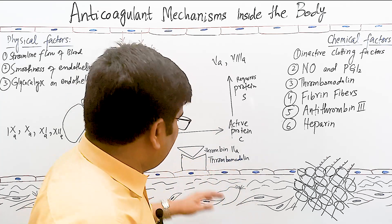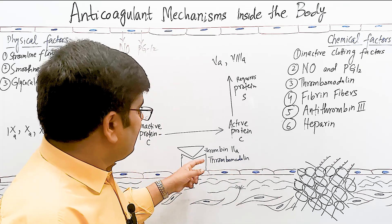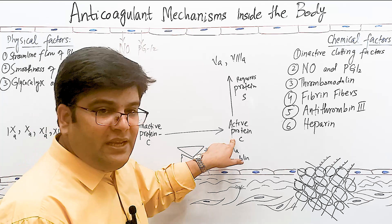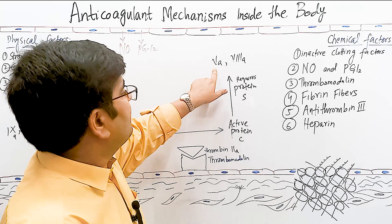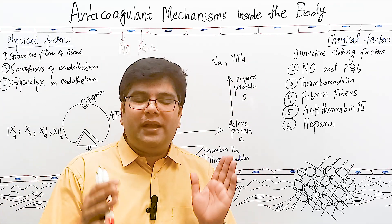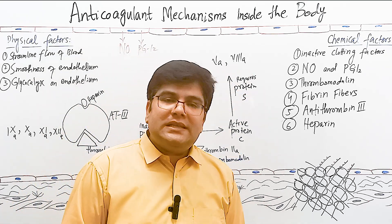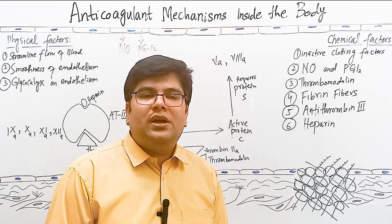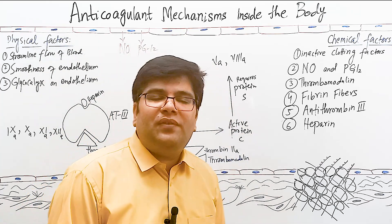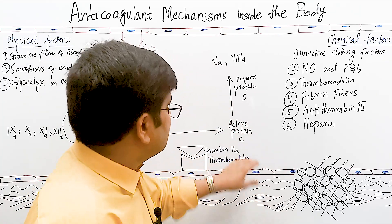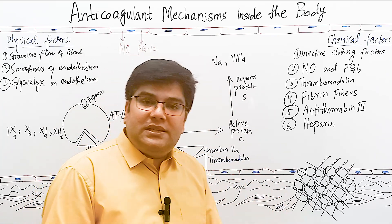Nitric oxide and prostaglandin I2 produced from normal endothelium cause vasodilation and inhibit activation and aggregation of platelets. Thrombomodulin, a protein attached to normal endothelium, binds thrombin and removes activated clotting factor number 2, preventing spread of clot. It also activates protein C, which in the presence of protein S inactivates already-activated clotting factors 5 and 8. Deficiency or mutation in these factors increases clotting risk.